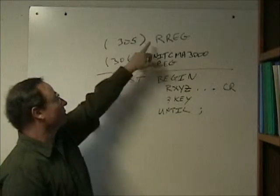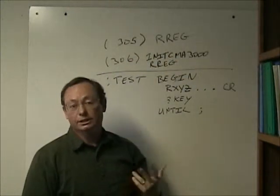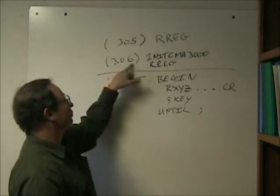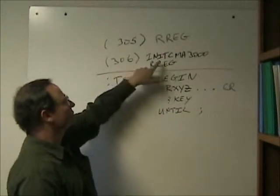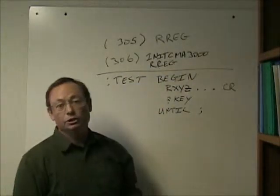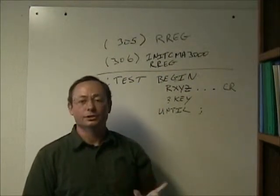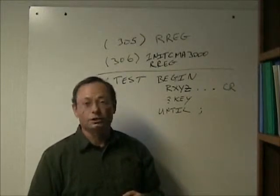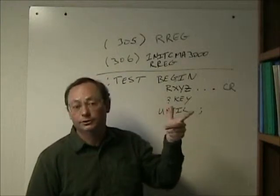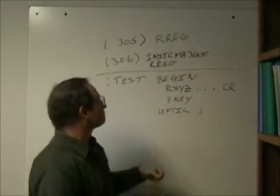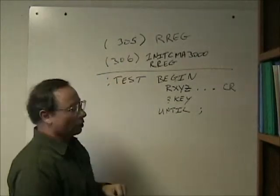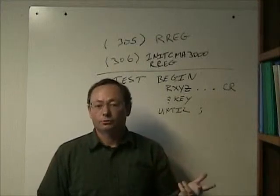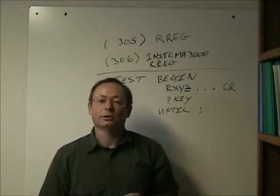In block 305, there's a word defined to read a register from the CMA-3000, and in block 306, there's a word to initialize the CMA-3000 in the operating mode that we'd like to run it in to measure acceleration on three axes: an x-axis, a y-axis, and a z-axis. These words are used to initialize the device in an operating mode that lets us read x, y, and z accelerations from the device.